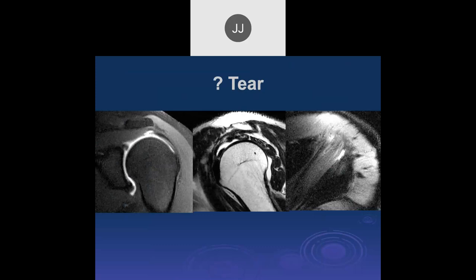Robert: looking at the musculotendinous junction, there's some increased signal on the coronal view — similar on the axial view. On the sagittal, there's also probably some increased signal there. That's an arthrogram study, so I think there's probably an articular-side tear. We can see a little bit of a defect going to the inferior surface, right in this area, and on the axial images it's this area here.